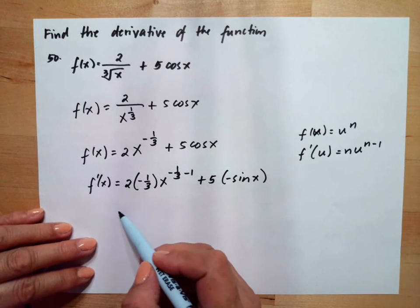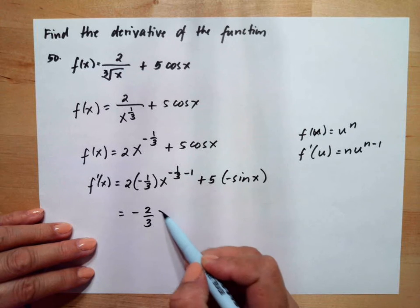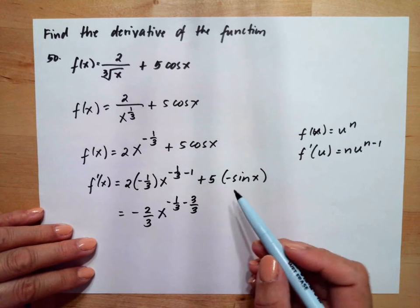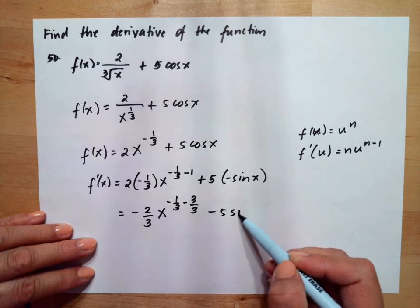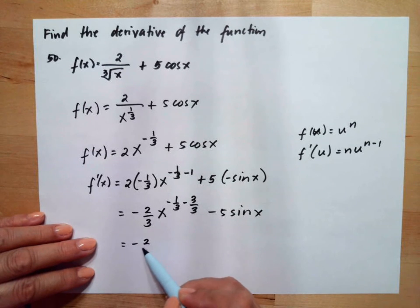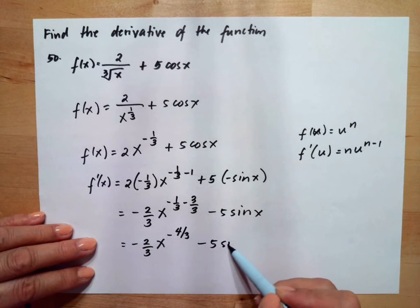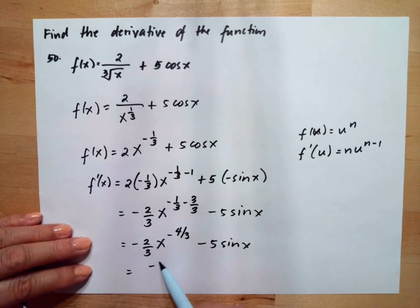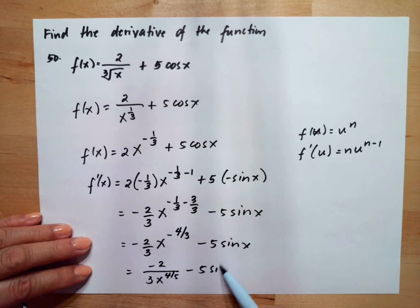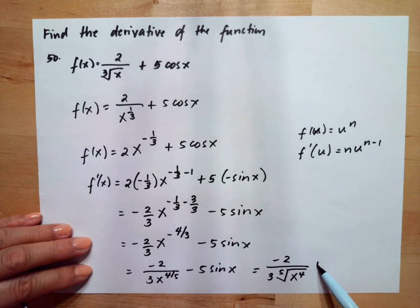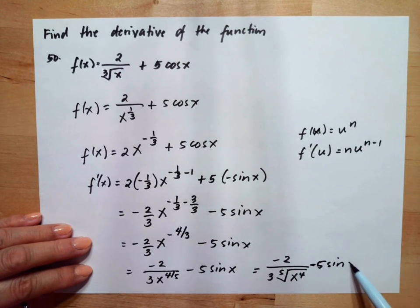This equals negative two-thirds x to the negative one-third minus three-thirds, getting the common denominator, minus 5 sine x. So this simplifies to negative two-thirds x to the negative four-thirds minus 5 sine x, or negative two over three times the cube root of x to the fourth, minus 5 sine x.